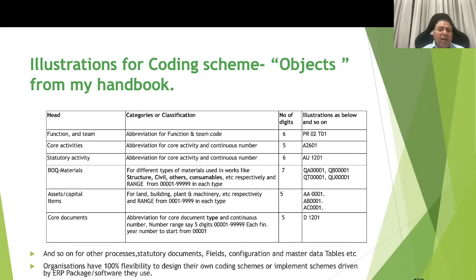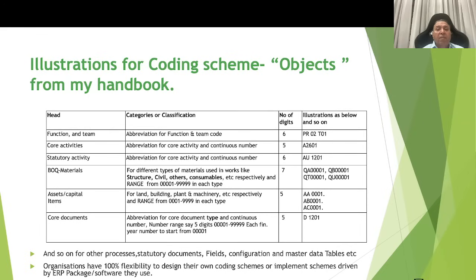Likewise, there can be many other objects such as fields, configuration tables, data tables, mass data tables, etcetera. Each one of these needs to be coded appropriately. Organizations have 100% flexibility to design their own coding schemes or implement schemes driven by the ERP packages and software they use. Within the coding structure proposed by the software or ERP package, the organization has to design the coding scheme accordingly.